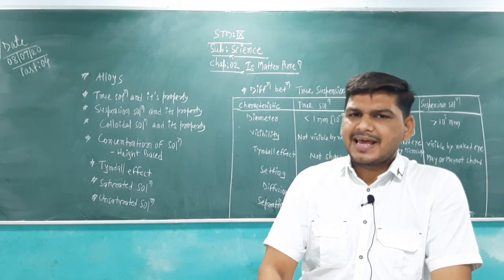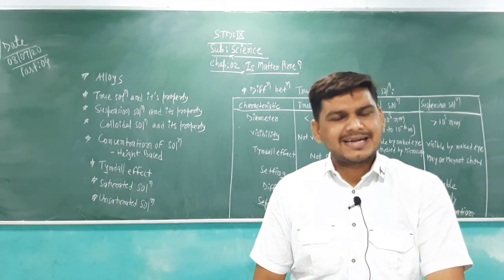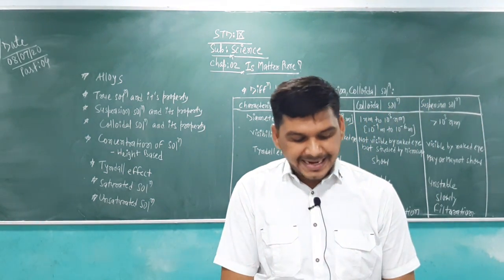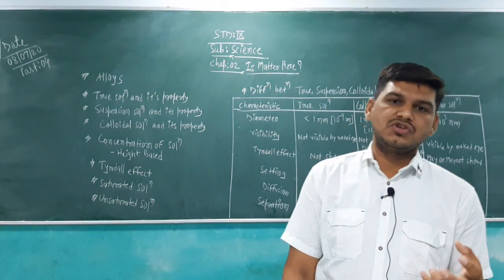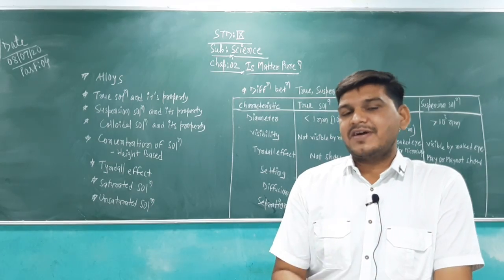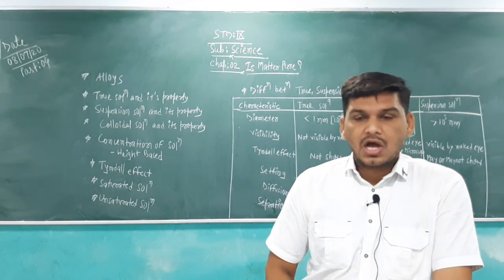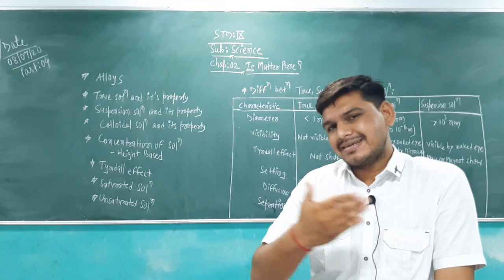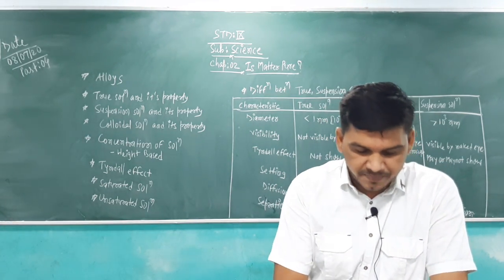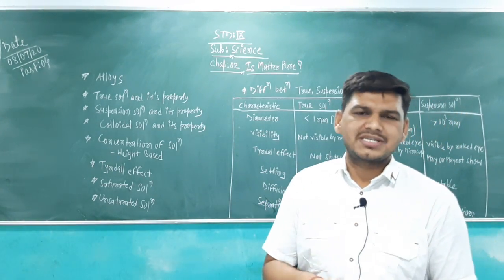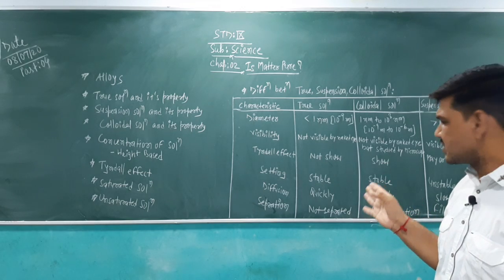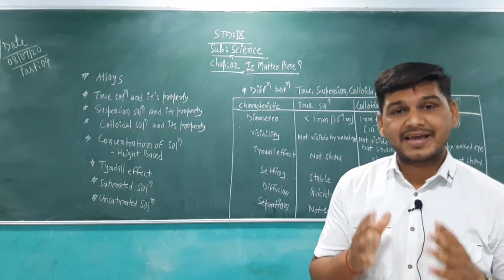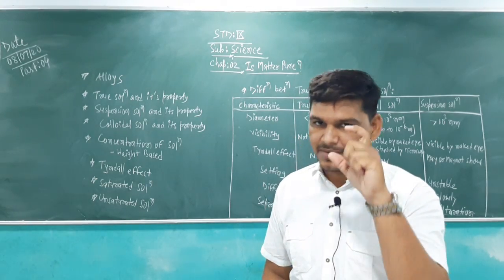Colloidal solution is like a heterogeneous mixture but acts like a homogeneous mixture. When light passes through it, the beam is scattered, showing two different paths — this is called the Tyndall effect. To separate the particles, we use the ultra filtration method, which can separate different molecules and layers from the solution. The diffusion rate is moderate. Colloidal particles cannot be seen with the naked eye but can be seen through a microscope.